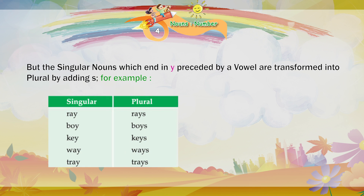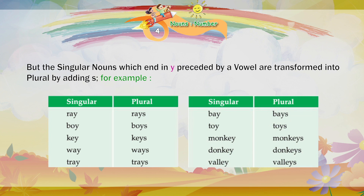Singular — Plural. Ray — Rays. Boy — Boys. Key — Keys. Way — Ways. Tray — Trays. Bay — Bays. Toy — Toys. Monkey — Monkeys. Donkey — Donkeys.